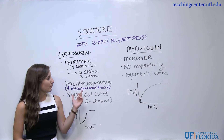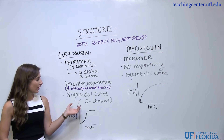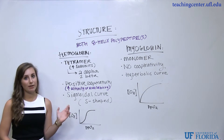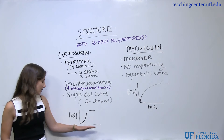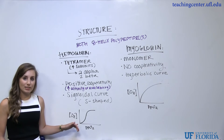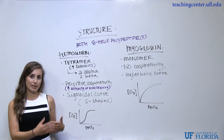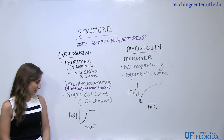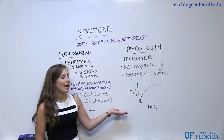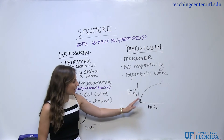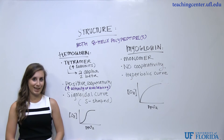This is reflected in the curves for each protein. A sigmoidal, or S-shaped, curve is characteristic of hemoglobin. As the partial pressure of oxygen increases, binding increases dramatically and eventually levels out at maximum saturation. Since myoglobin has no cooperativity, it has a hyperbolic curve, which is characteristic of standard Michaelis-Menten saturation kinetics.